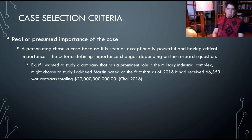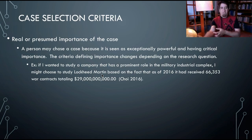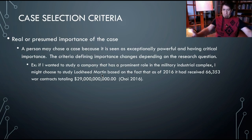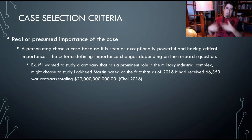For example, if I wanted to study a company that had a prominent role in the military industrial complex, I might select Lockheed Martin or Northrop Grumman because those companies are central. In 2016, Lockheed Martin received over 66,000 war contracts totaling over $29 billion. That's a pretty important section of the military industrial complex. So if I want to understand it, understanding Lockheed Martin might help me understand the connections between military industrial producers and Congress, and the public monies that are allocated for this.